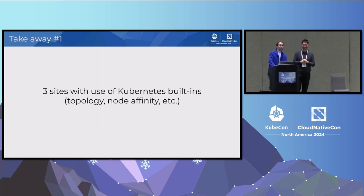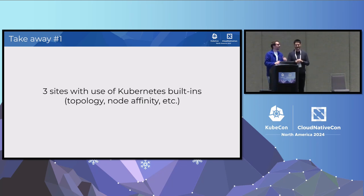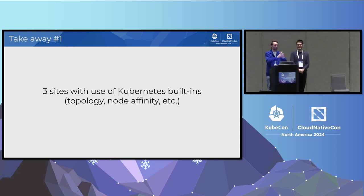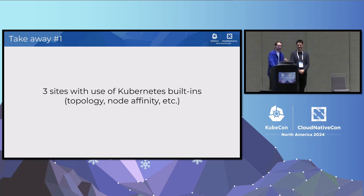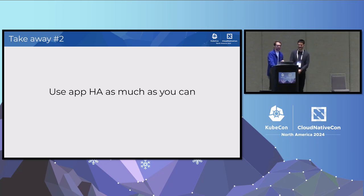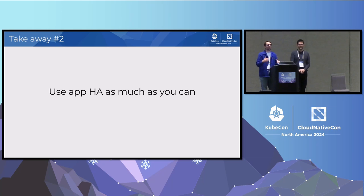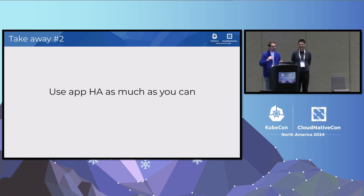Key takeaways: three sites is kind of a de facto architecture. Kubernetes provides multiple built-ins you can use from your StatefulSet definition to ensure you spread your PVs and workloads accordingly. Use application built-in high availability capabilities as much as you can — in this cloud-native world, the longer you can go with app-level HA, the better.